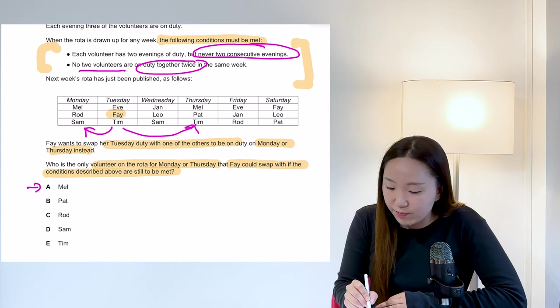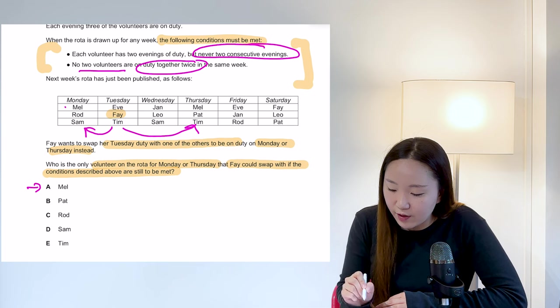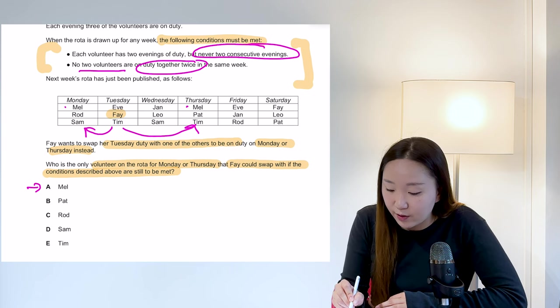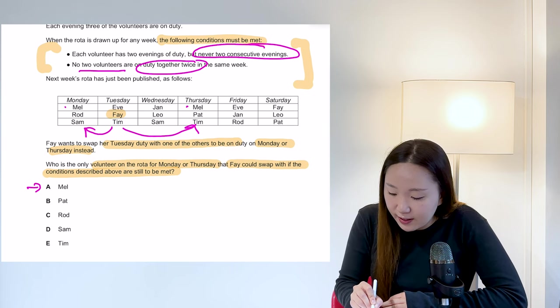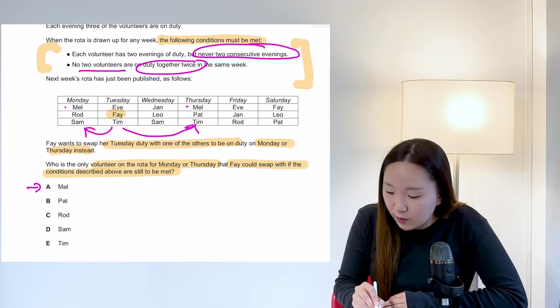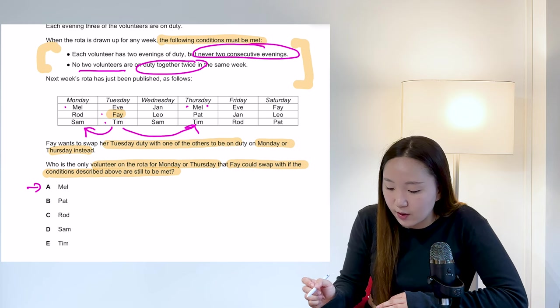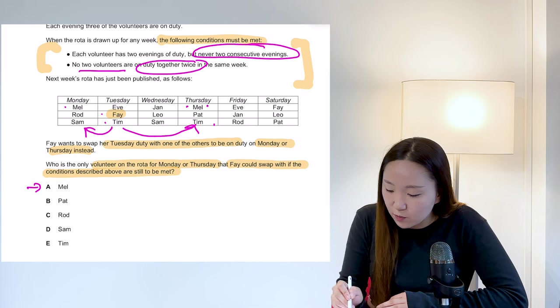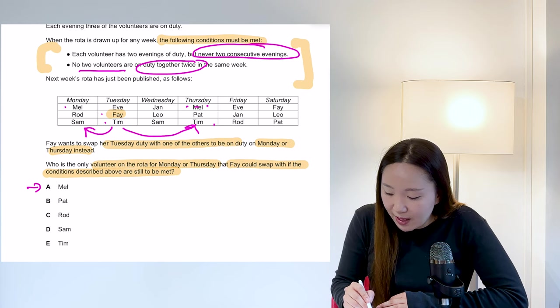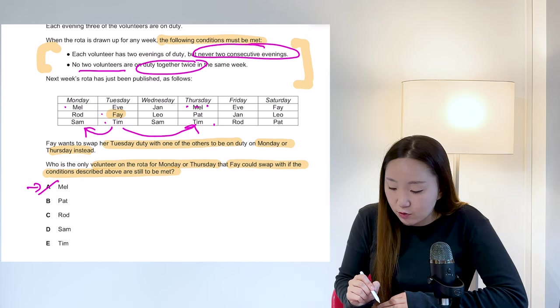If Faye were to swap with Mel, Mel works on either Monday or Thursday. So she has the opportunity to go to Monday or Thursday. If they swap here, is there any issue? Well, not in terms of consecutive working, but Mel and Tim are working together here and Mel and Tim are working together here. So that's not going to work. If they swap the other way, Mel would be consecutive. So Mel is out.